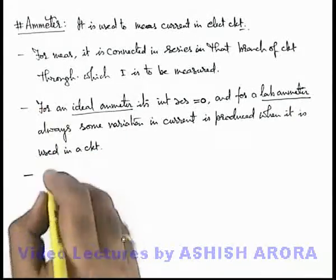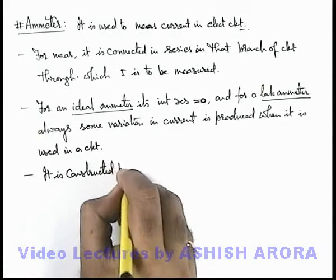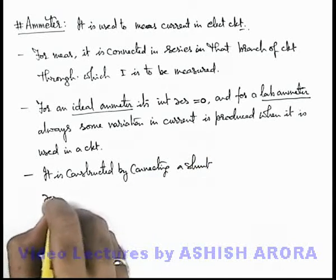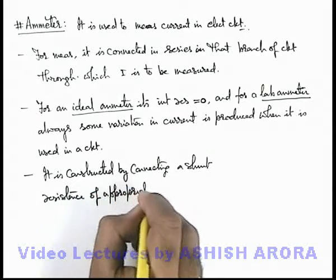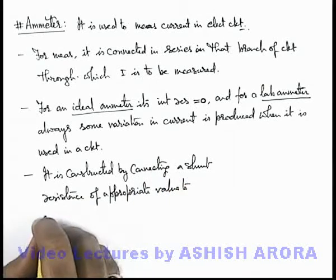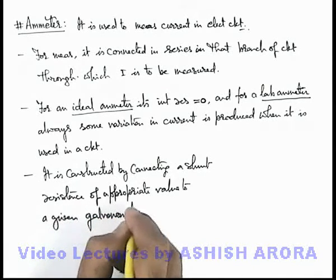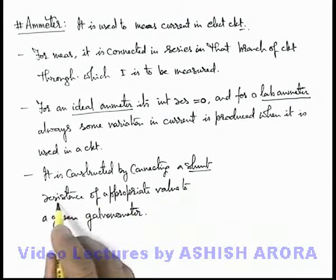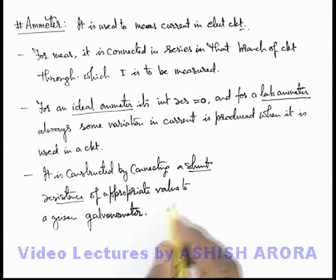If we talk about the construction of the ammeter, we can write that it is constructed by connecting a shunt resistance of appropriate value to a given galvanometer. That means a galvanometer can be converted into an ammeter of a specified range by connection of a shunt resistance to it. Shunt resistance is a low resistance which is connected across the given device, and is used to bypass the excess current flowing through the circuit.